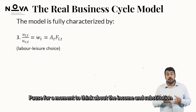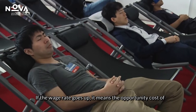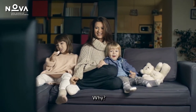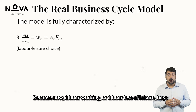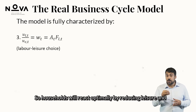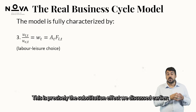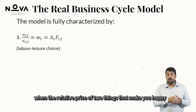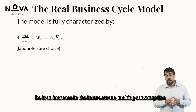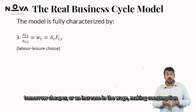Pause to think about income and substitution effects. If the wage rate goes up, the opportunity cost of not working increases — leisure just got more expensive relative to consumption. Because now one hour less of leisure buys more consumption than before, households react optimally by reducing leisure and increasing hours worked to afford more consumption. This is the substitution effect: when the relative price of two things that make you happy changes, households shift toward the one that got cheaper — whether it is an increase in the interest rate making tomorrow's consumption cheaper, or an increase in the wage making consumption more attractive relative to leisure.